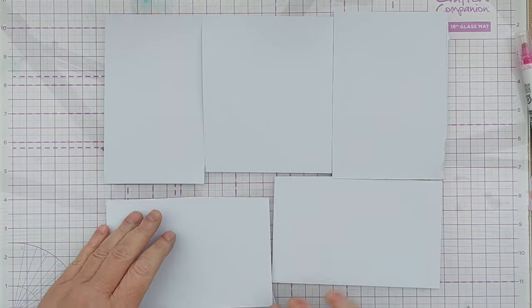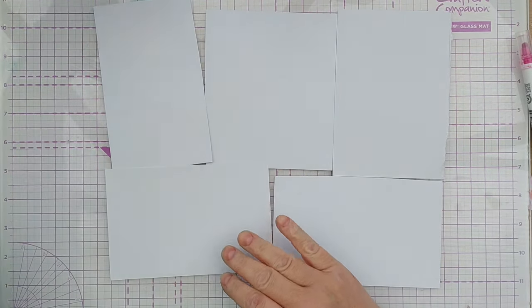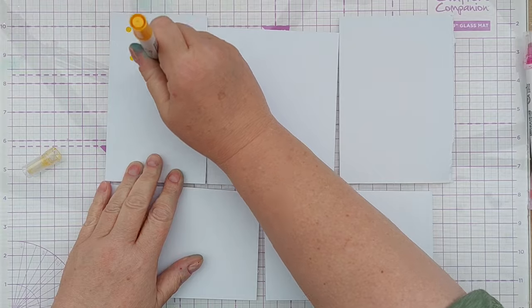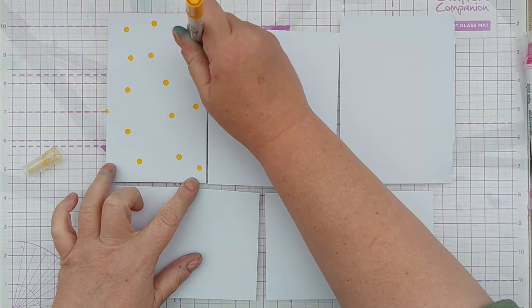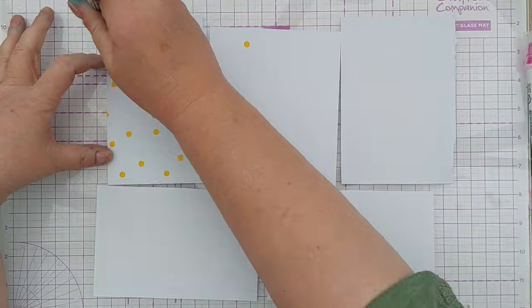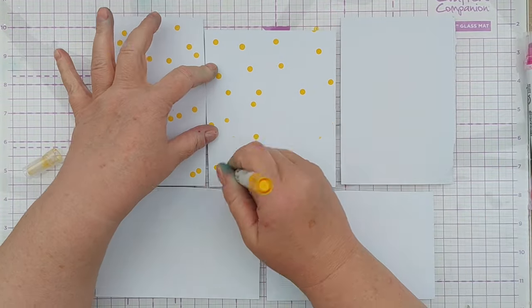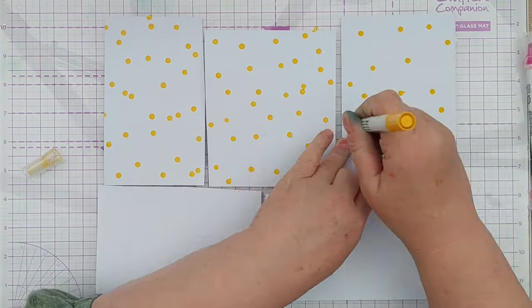Today I'm going to work with some of my larger white paper scraps and today's technique couldn't be simpler. I'm using my Zig Clean Colour Dot Markers to cover these scraps in colorful dots.